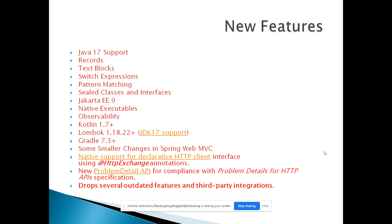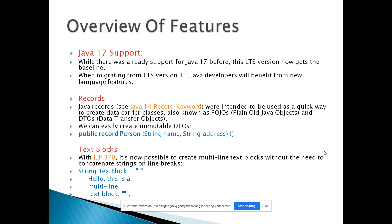There are also some smaller changes on the Spring MVC side. The HttpMethod, which was earlier an enum class, is no longer an enum — it becomes an instantiable class, so you can create an instance of it. There is also an HttpExchange annotation for a declarative HTTP client interface, and a Problem Details API from the HTTP side. Additionally, some outdated features and third-party integrations have been dropped.